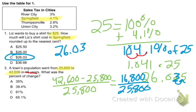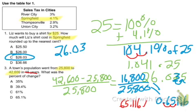So $16,800 divided by $25,800 and you get 0.65116. That's a decimal. To change it to a percent we need to move the decimal point two points over. So we get 65.116%. So 65.1% and the answer is D.